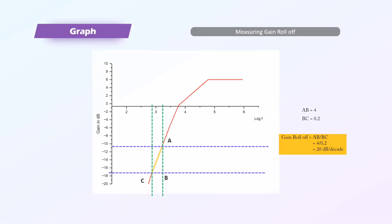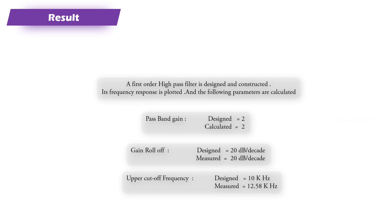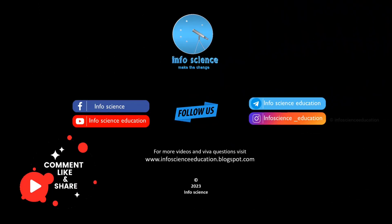We have completed the calculation for the experiment. Moving to the result section: a first order high pass filter was designed and constructed, its frequency response was plotted, and the following parameters were calculated. Pass band gain: designed 2, calculated 2. Gain roll-off: designed 20 dB/decade, calculated 20 dB/decade. Lower cutoff frequency: designed 10 kHz, measured value 12.58 kHz. If you have questions, please subscribe and like. We will see you in the next video. Thanks for watching.